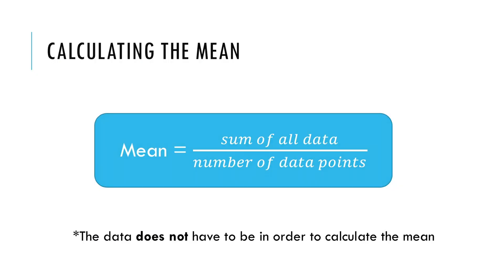So the first thing we're going to look at is calculating the mean. The mean is one way we can calculate the average of a set of data. To calculate the mean we add together all of the data that we are given and we divide that by the number of data points that we have been given. To calculate the mean the data does not have to be in order because we're just adding all the data together so it doesn't matter what order it's in.